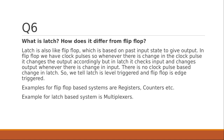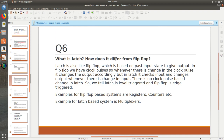What is a latch? How is it different from a flip-flop? A latch is also like a flip-flop, which is based on the past input state to give the current output. In a flip-flop, we have something called clock pulses — whenever there is a change in the clock pulse, it changes the output accordingly. But in a latch, it just checks the input and changes the output whenever there is a change in input. There is no clock pulse required in a latch. So, the latch is level triggered whereas the flip-flop is edge triggered. Examples of flip-flop based systems are registers and counters; examples of latch based systems are multiplexers.